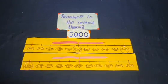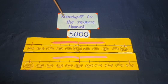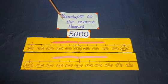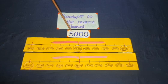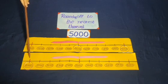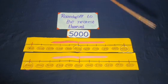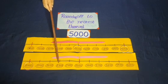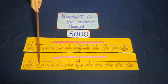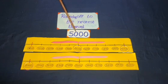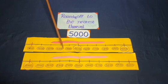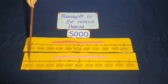Now we find the greatest number that can be rounded off to the nearest thousand to get 5000. Here is the number bar with numbers from 5000 to 6000. Look at digits 4, 3, 2, 1 at the 100th place — all these numbers go backward.